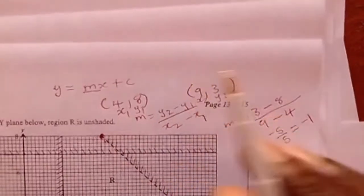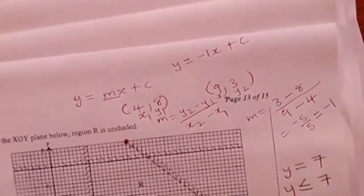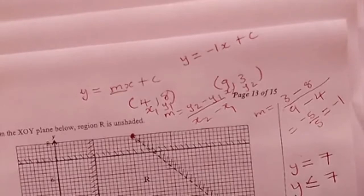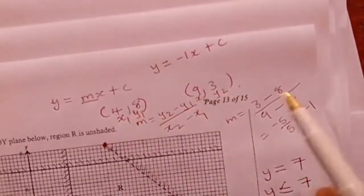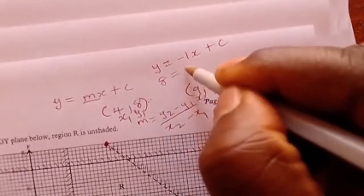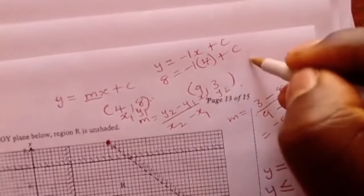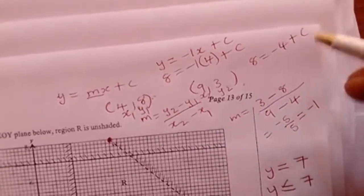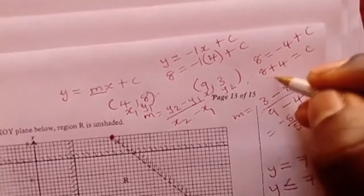Substituting minus 1 on m, you get y equals minus 1x plus c. For the equation of the line to be complete, we now need the value of c. The value of c would be easy if the line was cutting the y-axis, but the line is not cutting the y-axis on the given graph. So we are going to find c using the skill of substitution. Choose any point of your choice from the two points we have used — we can use (4, 8).